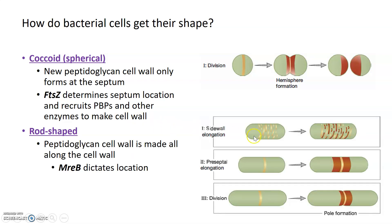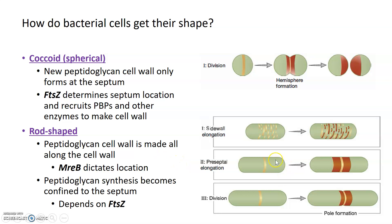Rod-shaped cells get their shape differently. During growth before division, a process called sidewall elongation occurs where the cytoskeletal protein MREB dictates where new peptidoglycan cell wall is made all along the length of the rod-shaped bacterium. Once division steps begin, FtsZ redirects peptidoglycan synthesis to be confined to the center septum, as in spherical bacteria, and the new peptidoglycan wall is built between the two rod-shaped cells. So MREB is responsible for elongating the rod shape during growth, while FtsZ builds the new cell wall after cell division.